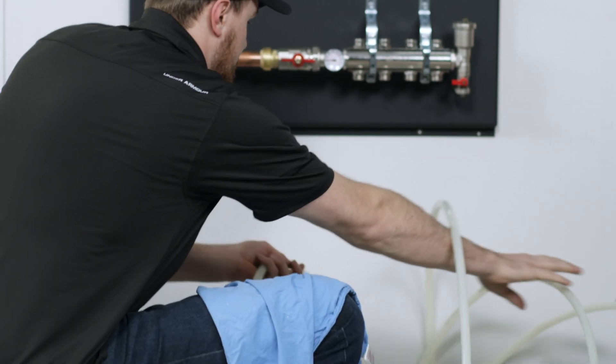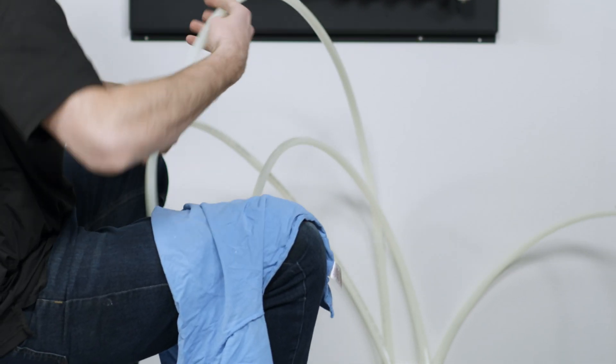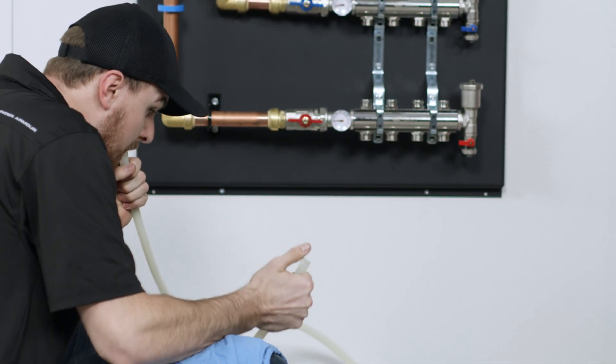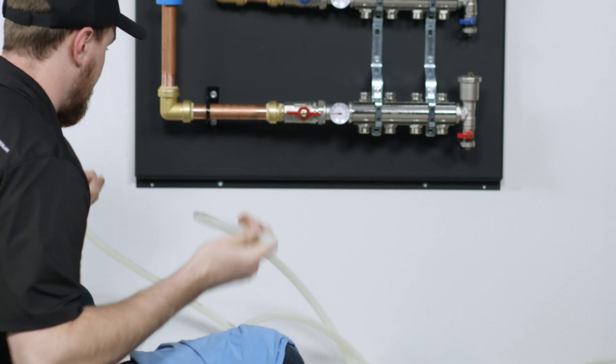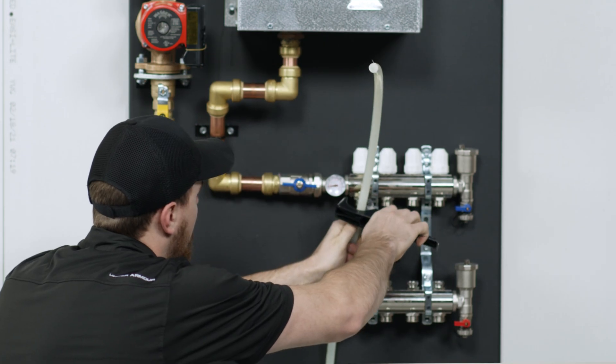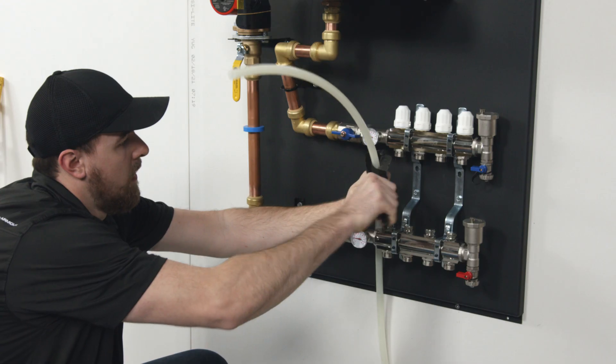Connect the PEX loops in your floor to the manifold. Be sure to identify the supply and return pairs. This can be easily checked by blowing into one end of the pipe and finding its mate. Cut the pipe to length, leaving a bit extra.